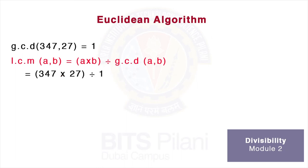To find the LCM, we use the formula LCM(a,b) = (a × b) / GCD(a,b). In our case, the LCM is 347 × 27 / 1, which equals 9369.